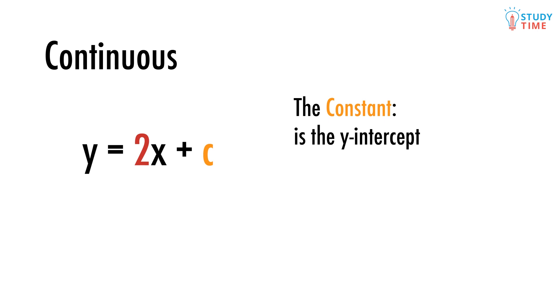Now for that constant c. The c is just our y-intercept, which is where the line crosses the y axis. The y axis is located at x equals 0. So if we plug x equals 0 into the equation, we just get y equals c.